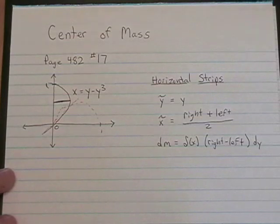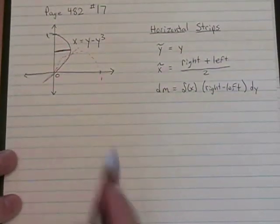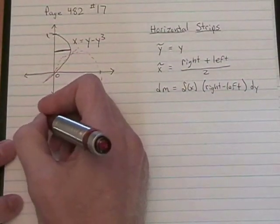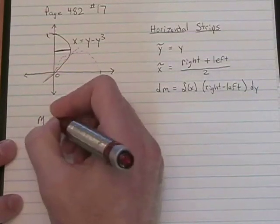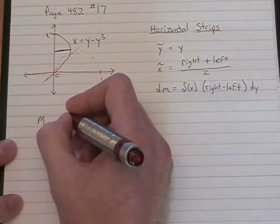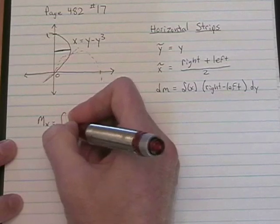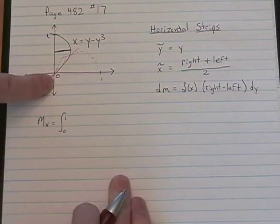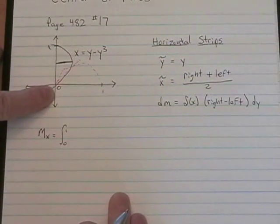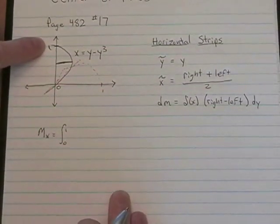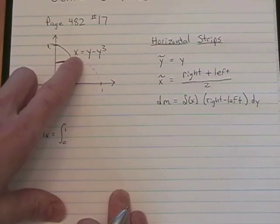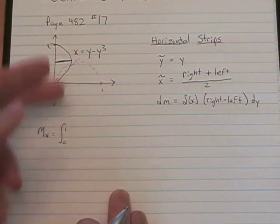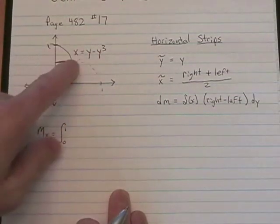Let's go ahead and start by doing the integrals for our moments. For the moment about the x-axis, we do the integral from a to b, and you'll notice on my graph, I've already indicated that a is 0 and b is 1. And the way you do that is you just set x equals 0 and y minus y cubed equals 0.